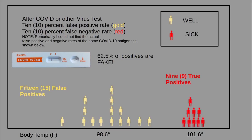On the other hand, 9 of the 10 actually sick people are reported as sick — 9 true positives. This means a majority, 62.5%, almost two-thirds of the positive test results are false positives — fake test results. If the true incidence of the disease is much lower, for example 1.3%, the false positive problem is even greater.